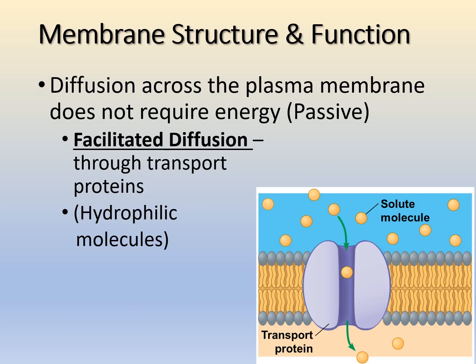The next type is facilitated diffusion — still passive, so no energy required — but it requires a transport protein. These are the channel transport proteins with no energy requirement. Molecules still move from higher to lower concentration, but they may be hydrophilic and unable to cross the phospholipid bilayer directly. Only small non-polar molecules can go straight through; everything else needs a channel protein, but still no energy because they're moving down their concentration gradient.